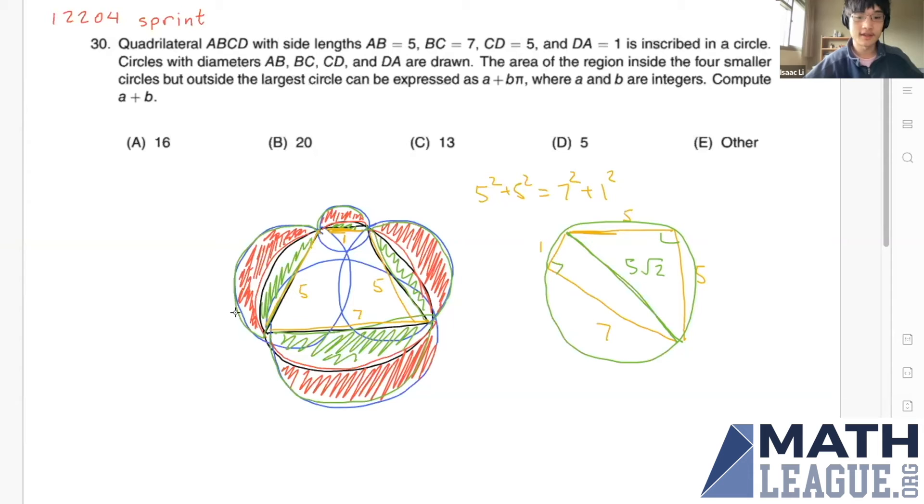From here, we can figure out the area we want by adding semicircle, subtracting the whole circle, and then adding in the quadrilateral. But here's a cool fact that we can learn from this problem.